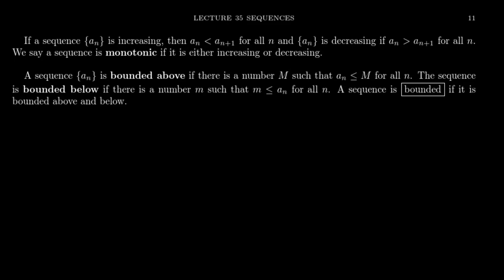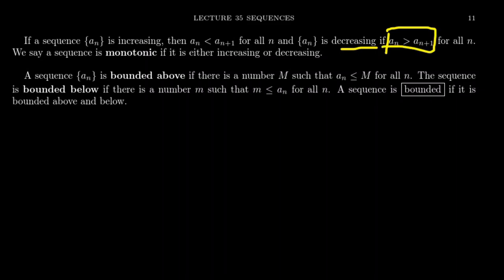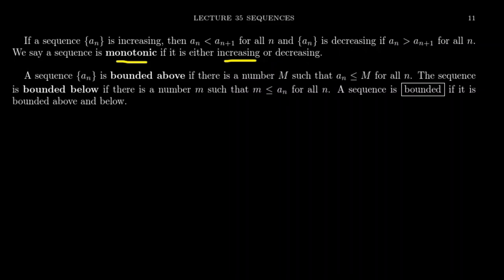For example, we don't have derivatives, so we couldn't use L'Hôpital's rule in that previous situation, but we can still use derivative-like arguments. That is, we can still talk about monotonicity of sequences. What does it mean for a sequence to be increasing? We often think of increasing as meaning the derivative is positive, but increasing really just means that the next term is bigger than the previous term. And decreasing means the next term is smaller than the previous term. A sequence is monotonic if it's either increasing or decreasing — a gender-neutral term to describe both cases.